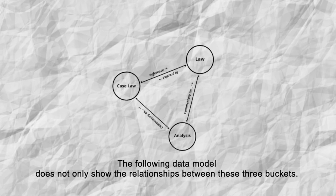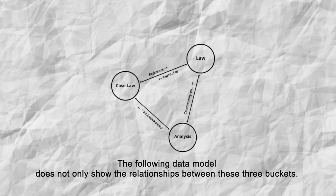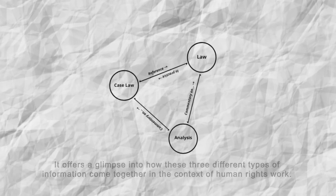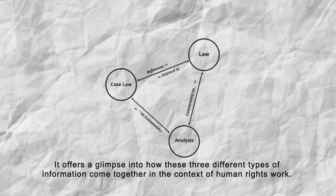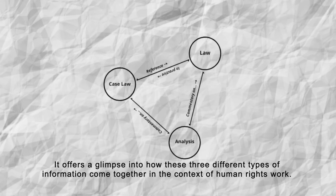The following data model does not only show the relationships between these three buckets. It offers a glimpse into how these three different types of information come together in the context of human rights work.